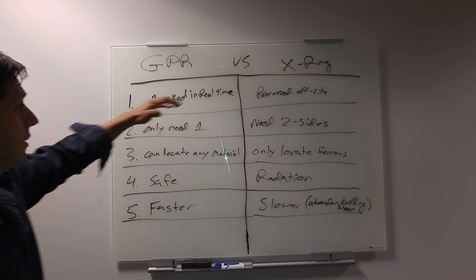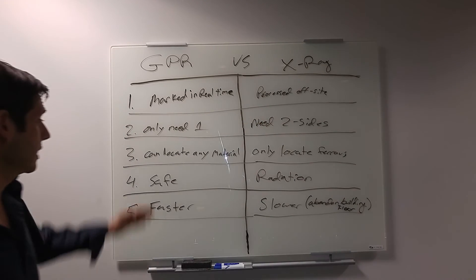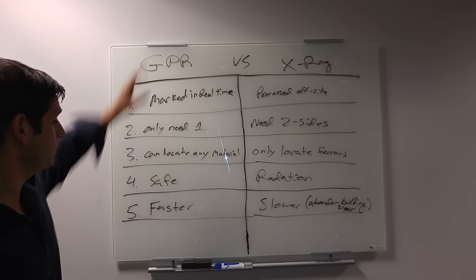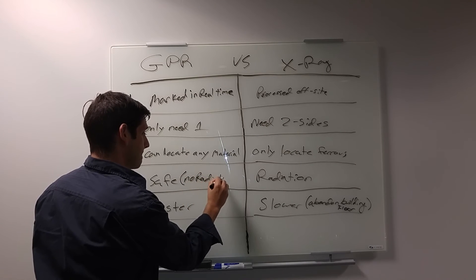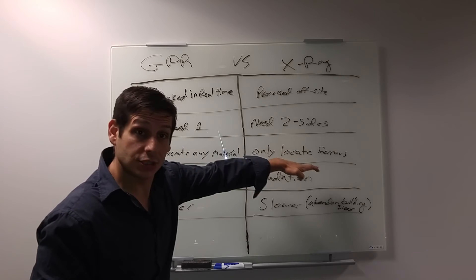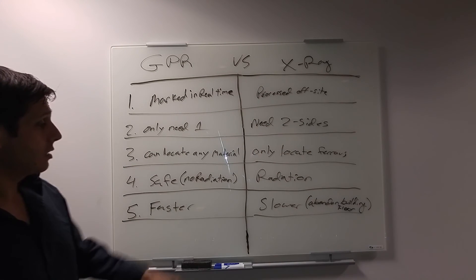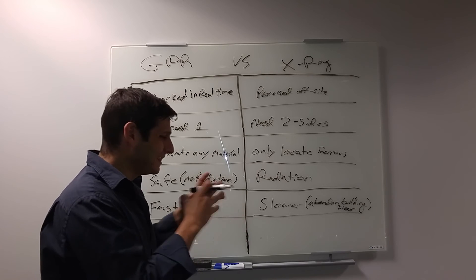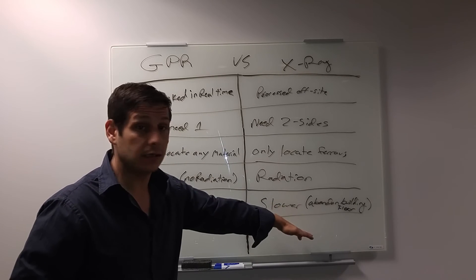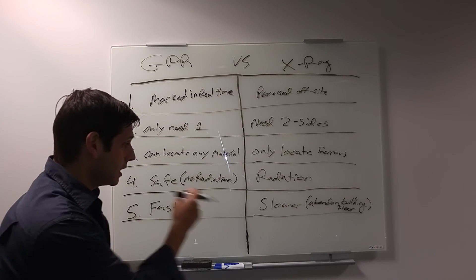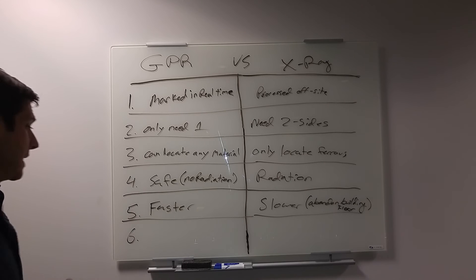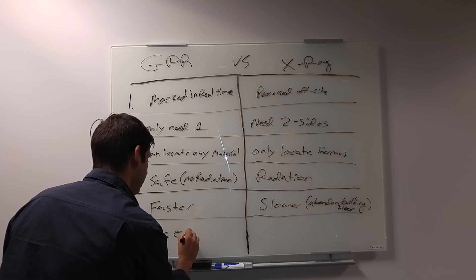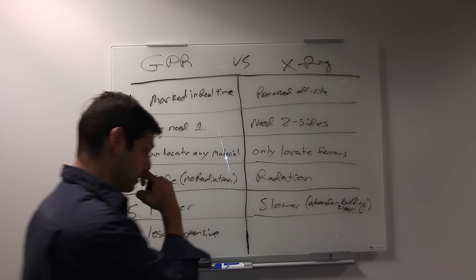So, marked in real time versus processed off-site. Only need one side, need two sides for X-ray. Can locate any material, GPR. Only locate ferrous materials for X-ray. Safe, no radiation for GPR. Radiation from X-ray, faster for GPR, slower for X-ray, in big part because people generally have to abandon the job site, or at least literally the area that it's being X-rayed. And clear me up on this. If I'm wrong on this, clear it up, okay? Clear it up. And then here, and again, this will depend, I think, on who's doing it. But, potentially, GPR tends to be less expensive to hire out, more expensive.